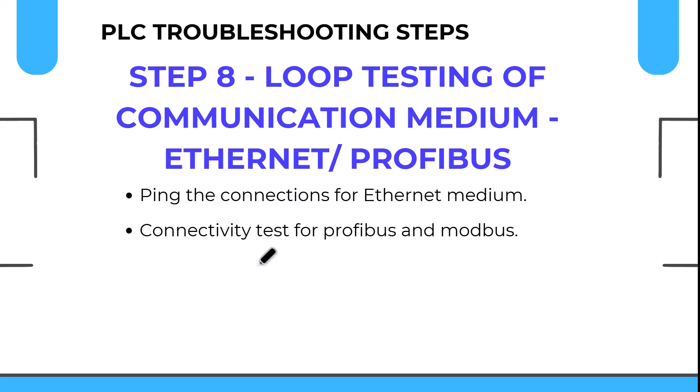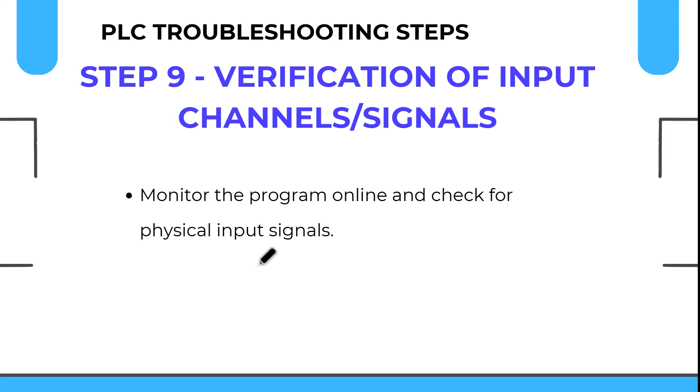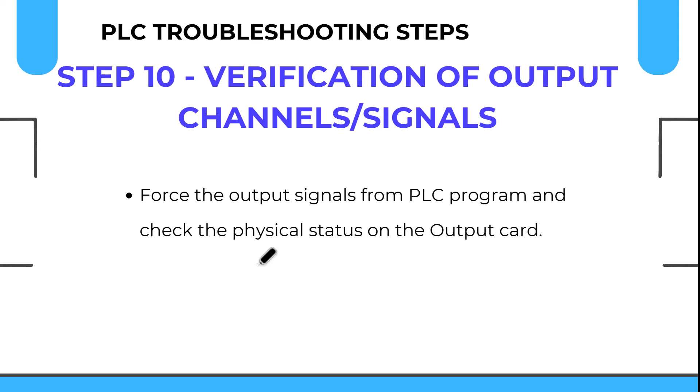Loop testing is a key aspect of PLC troubleshooting — whether the communication medium is Ethernet, Profibus, Modbus, or fiber optic (tested with a light signal). If a technician reports that a digital or analog signal is arriving at the PLC input card, go to the hardware monitoring in the PLC software and verify whether that specific signal is actually present on the input card. Verification of input channels and signals is mandatory. A channel may become faulty due to an abnormal signal arriving at the input card.